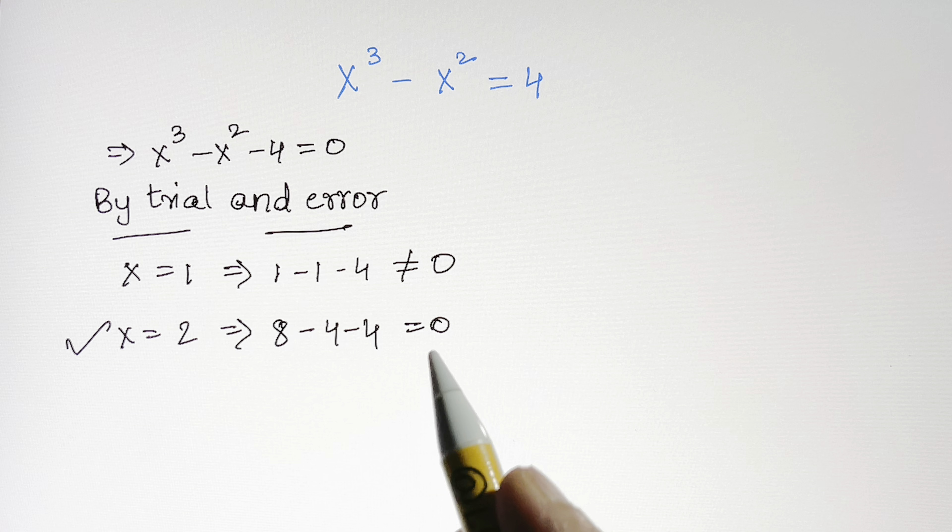Whatever we multiply with (x minus 2) should give x³, so we multiply by x². When x² times x gives x³ — that's what we want. Don't forget to also multiply by the second term: x² times negative 2 gives minus 2x².